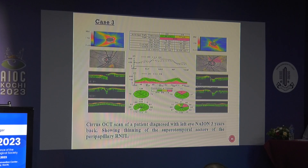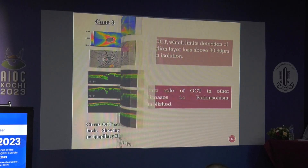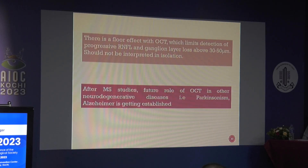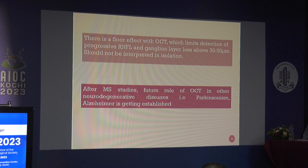In an old case of left eye NAION from three years back, thinning of the superior temporal aspect in peripapillary RNFL is seen. In a chronic or recovered case you still see RNFL thinning. There is also a floor effect with OCT that limits detection of progressive RNFL/GCL loss above 30 to 50 micrometers, so in very advanced disease it should not be interpreted in isolation — you must correlate clinically as well.